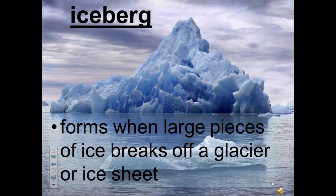One iceberg that broke off the Antarctic ice sheet was twice the size of the state of Rhode Island. When ocean water freezes, the resulting ice is not salty — the salt is pushed out of the ice crystals as they form, causing the water around the new ice to become more salty. Remember to fill in your note sheet and go back into the video if you need to.